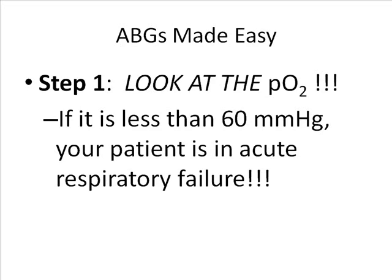Now remember step one: you need to take a very quick look at the PO2. This often gets forgotten because we get so busy trying to name our ABGs that we don't actually look to see whether the patient is having problems oxygenating. If your patient's PO2 is less than 60 mmHg, your patient is most likely in acute respiratory failure.